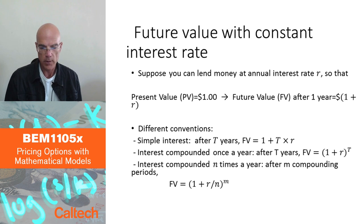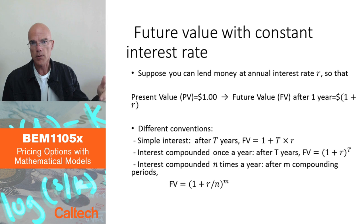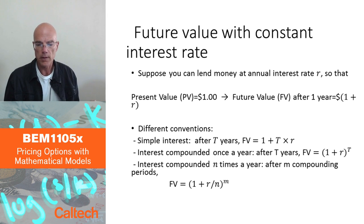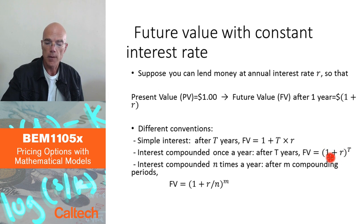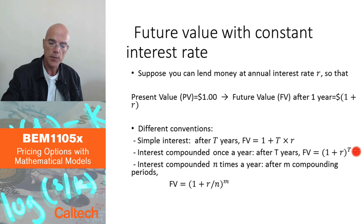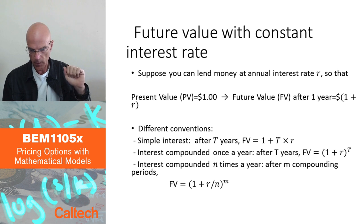More frequently, banks quote interest rates as compounded at certain time intervals. The simplest case is compounded once a year, meaning after one year the bank adds interest to your capital, and after the second year it computes interest on both the initial capital and the first year's interest. So after two years you have (1 + r)², and after T years you keep multiplying by (1 + r) — you're computing interest on interest.